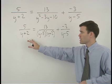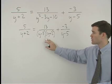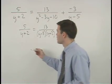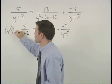You can see that our common denominator is y minus five times y plus two. So we multiply both sides of the equation by this common denominator.